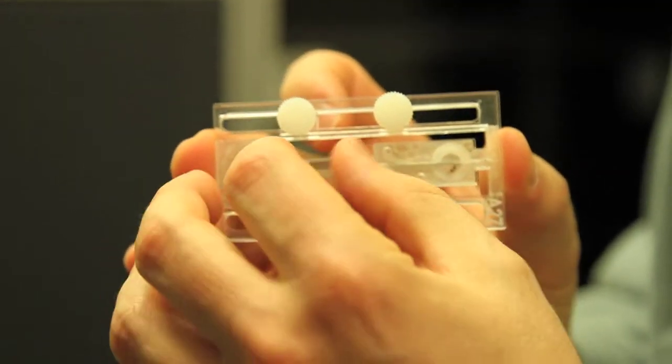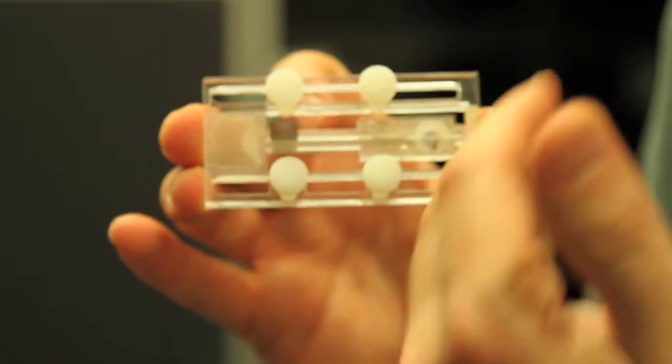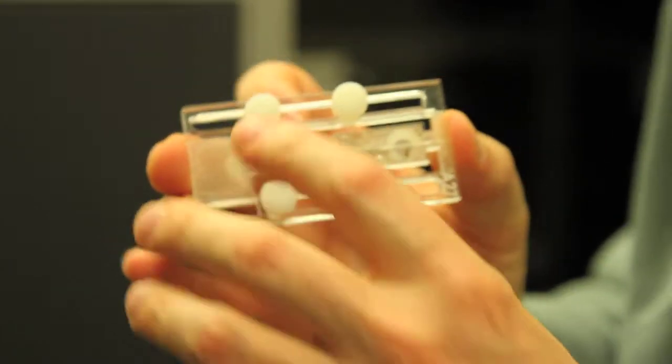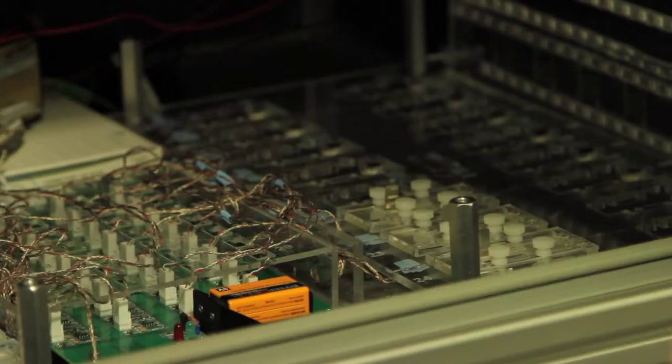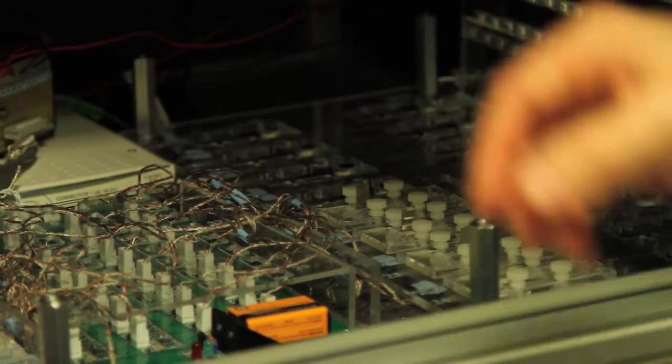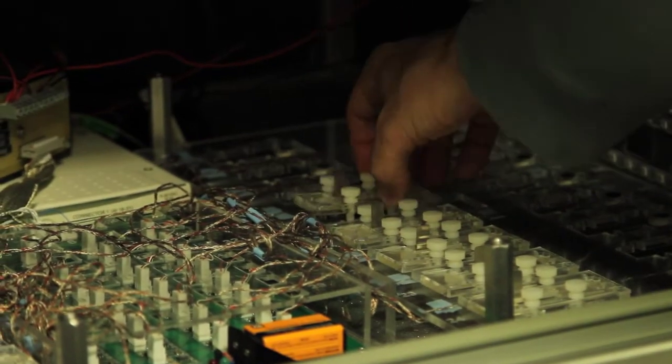We have these special chambers where we can put two flies in here. We put a male on one side and a female on the other, and then I'm going to put them on top of this microphone array, and then we can open up the chamber to introduce the male and the female to each other, and then we record lots of songs.